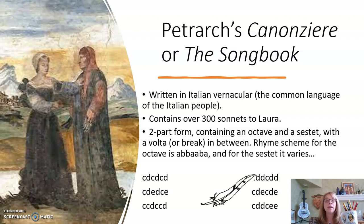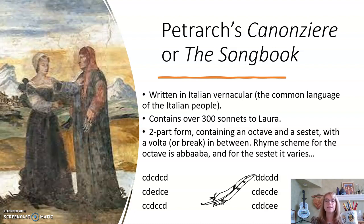The octave pattern in a Petrarchan sonnet is always A-B-B-A, A-B-B-A, but the sestet can vary — it could be something like C-D-C-D-C-D, or C-D-E, D-C-E, C-C-D, C-C-D, and so on. There are lots of different variations.